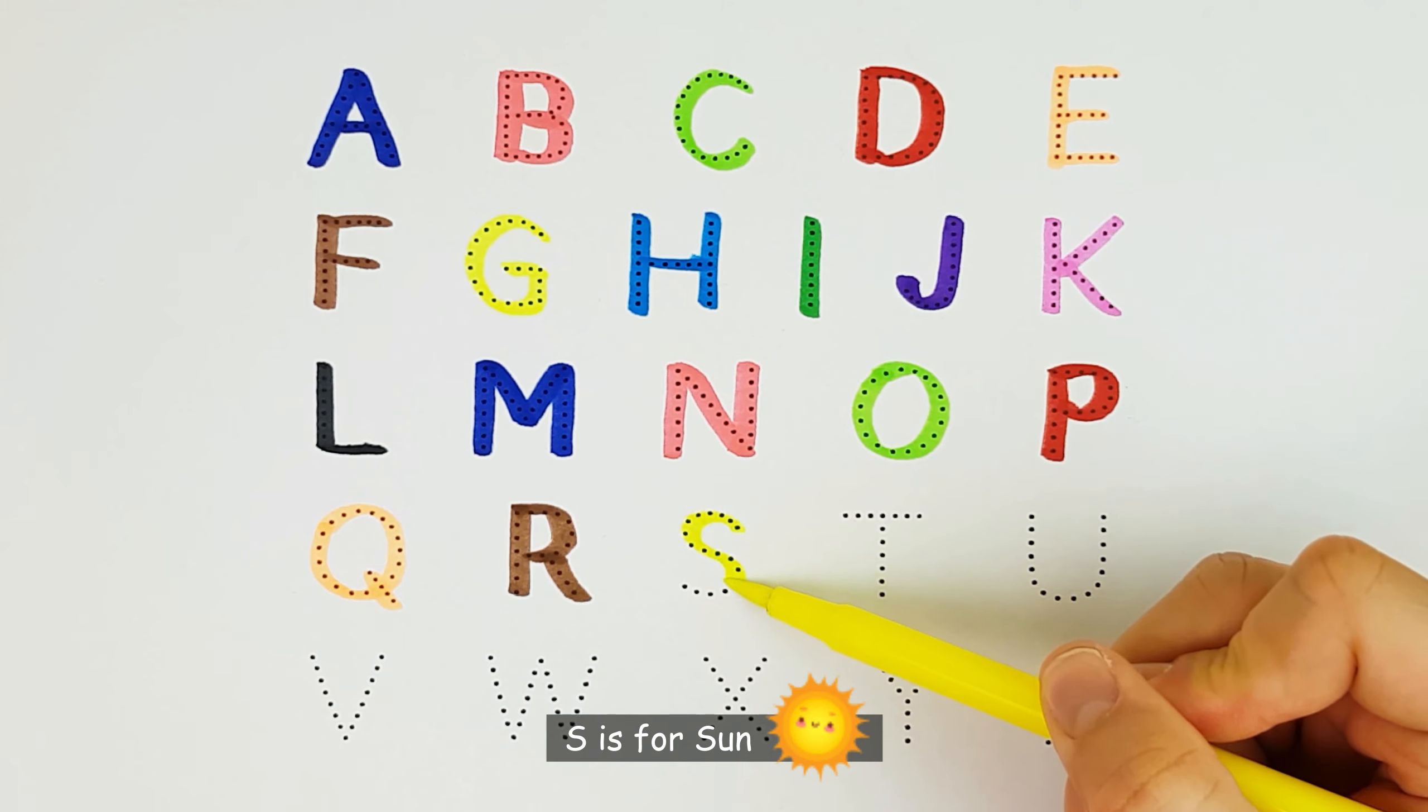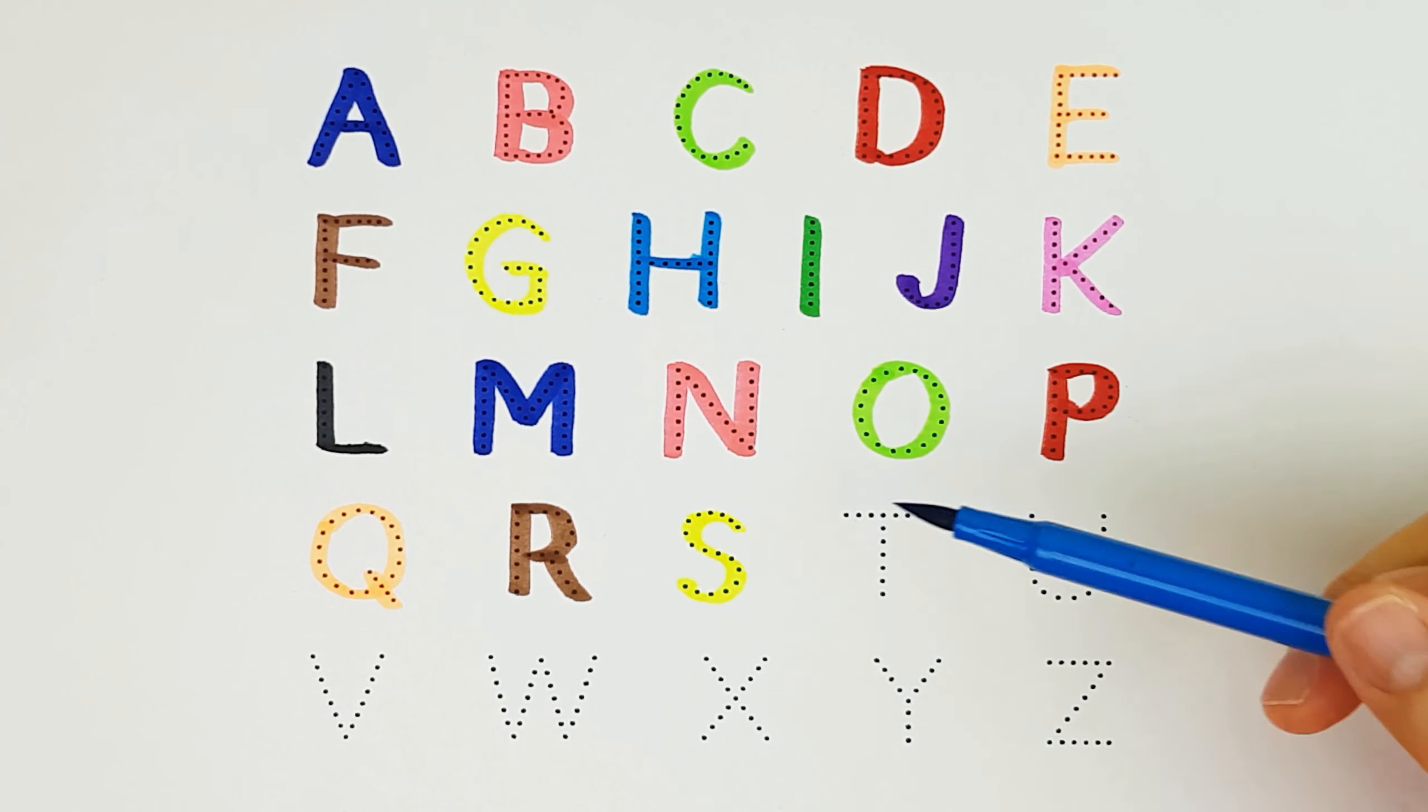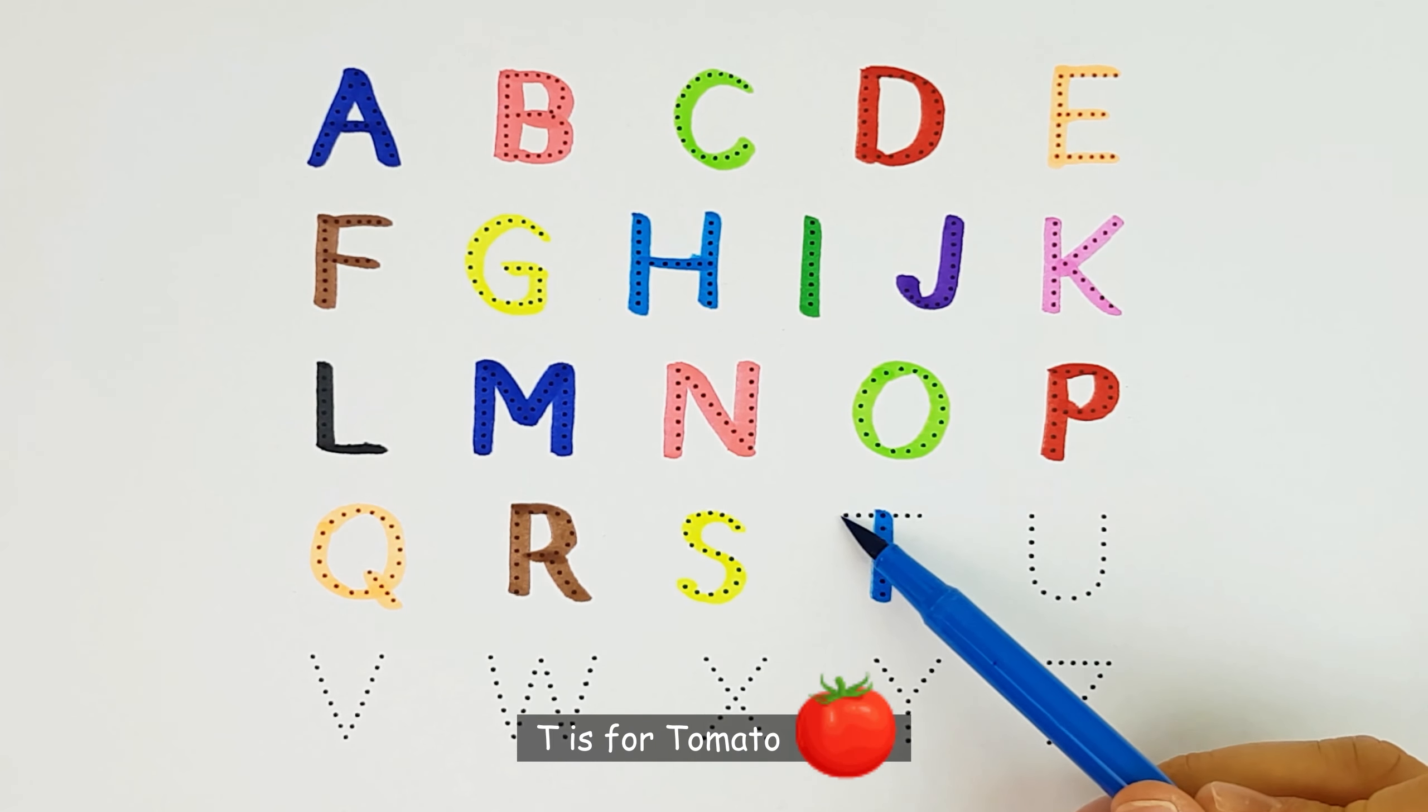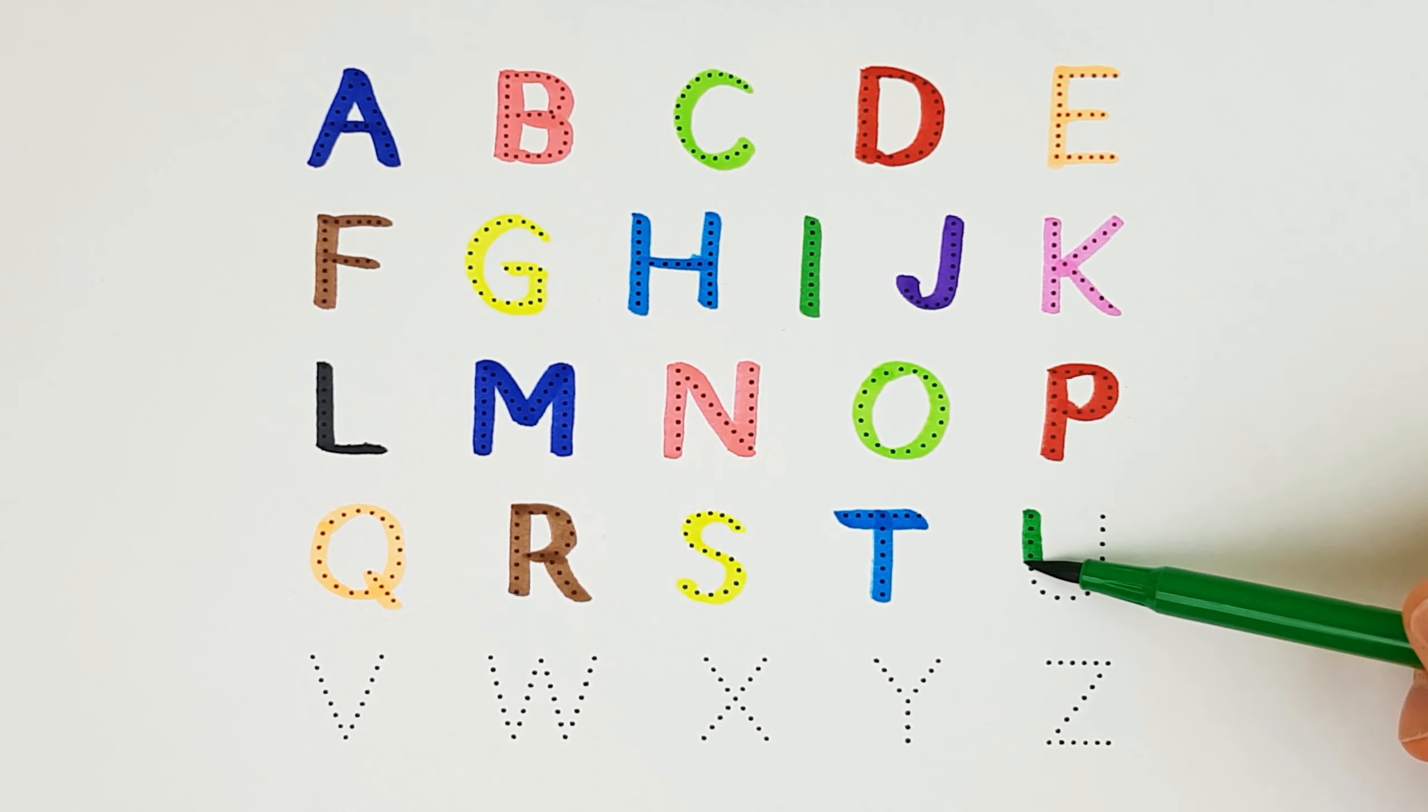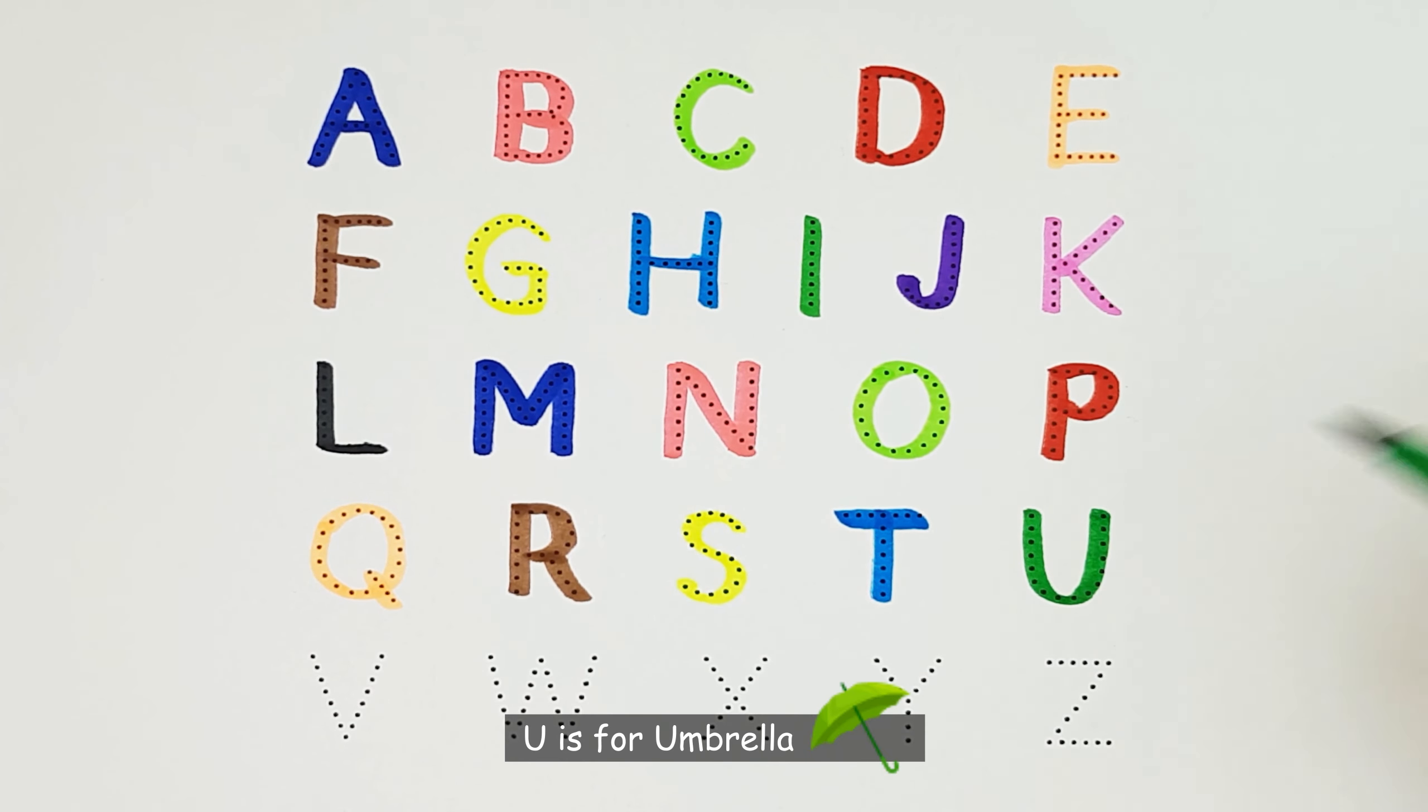S. S is for Sun. S. T. T is for Tomato. T. U. U is for Umbrella. U.